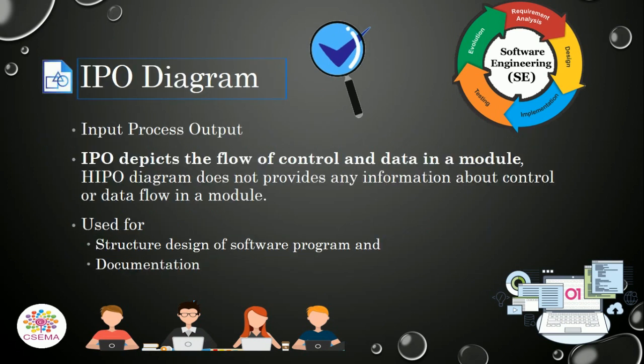So what is the IPO diagram? The HIPO diagram doesn't provide any information about how control or data is flowed into the module. But the Input Process Output Diagram performs these operations in a well-structured manner, and it is used for the structural design of a software program and provides better documentation.